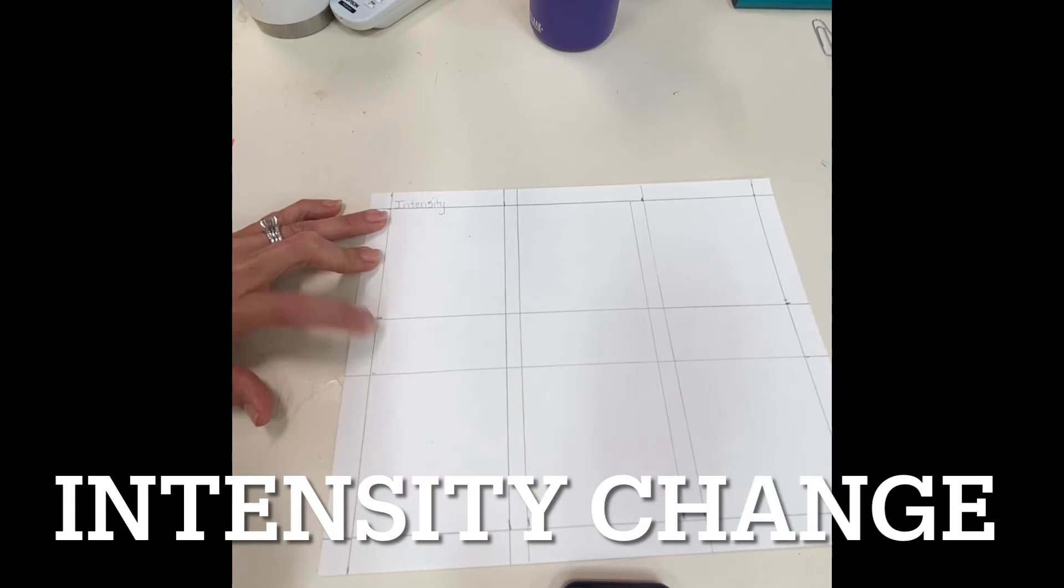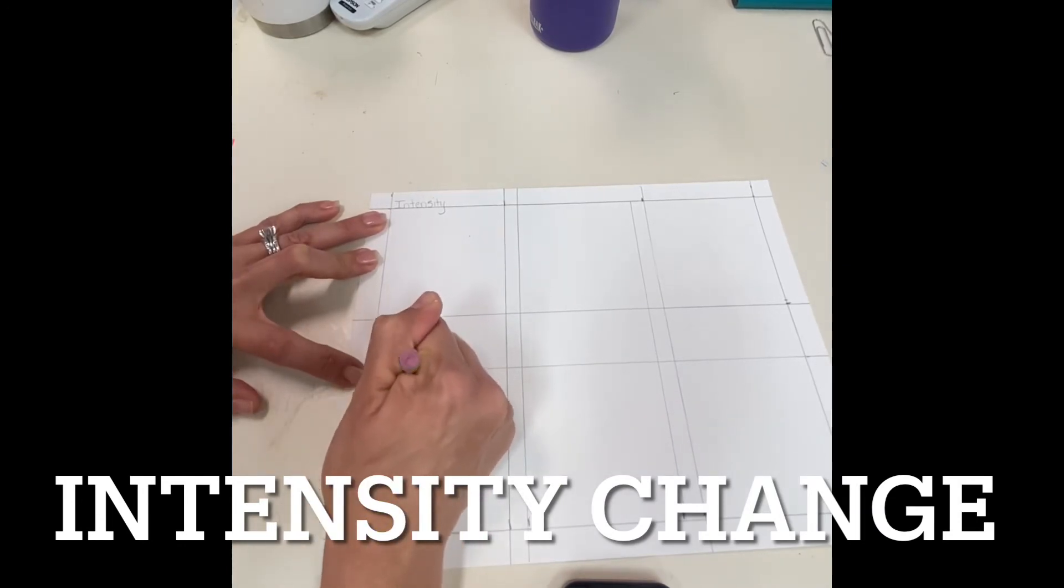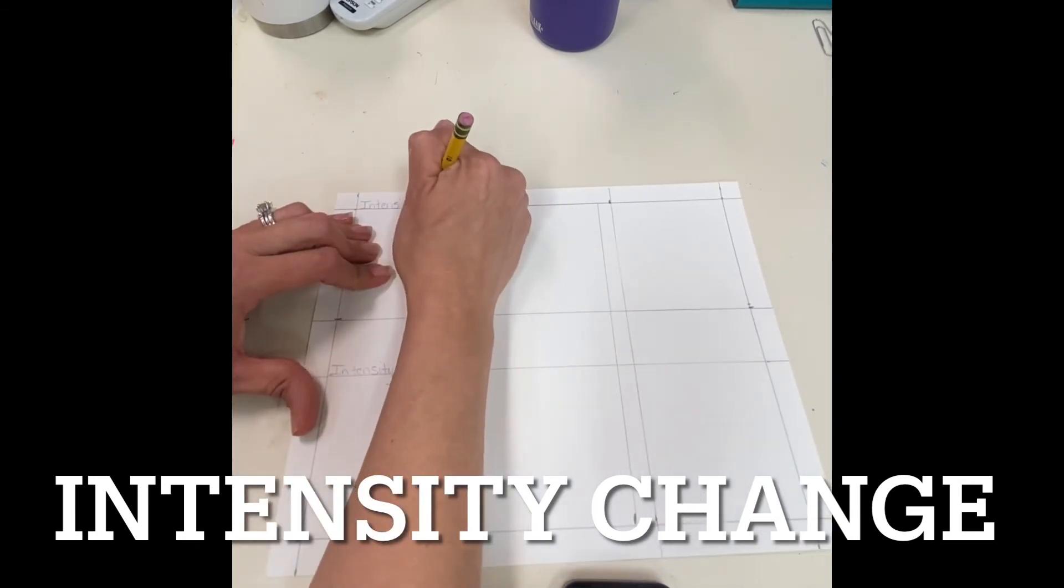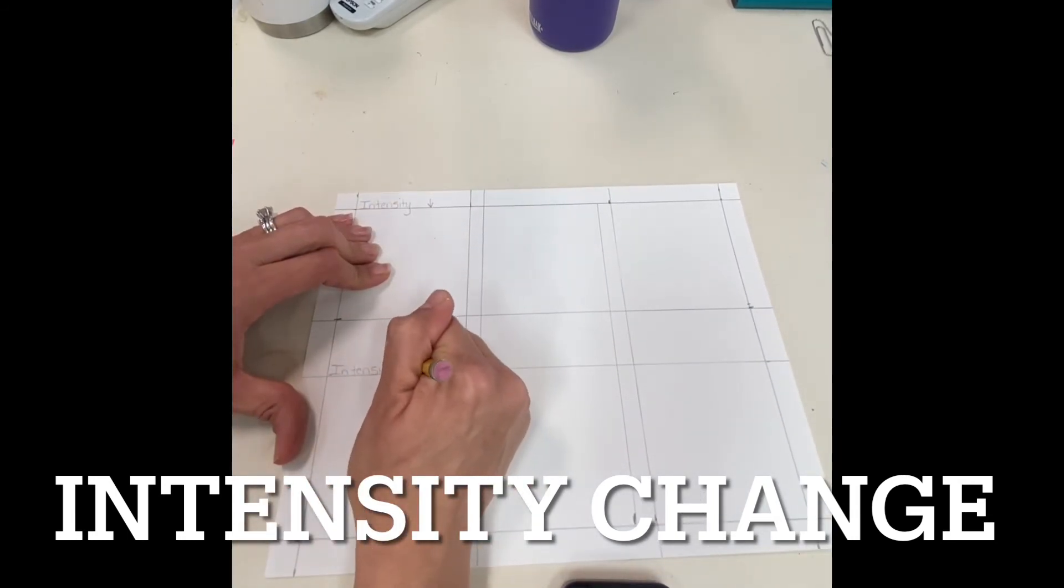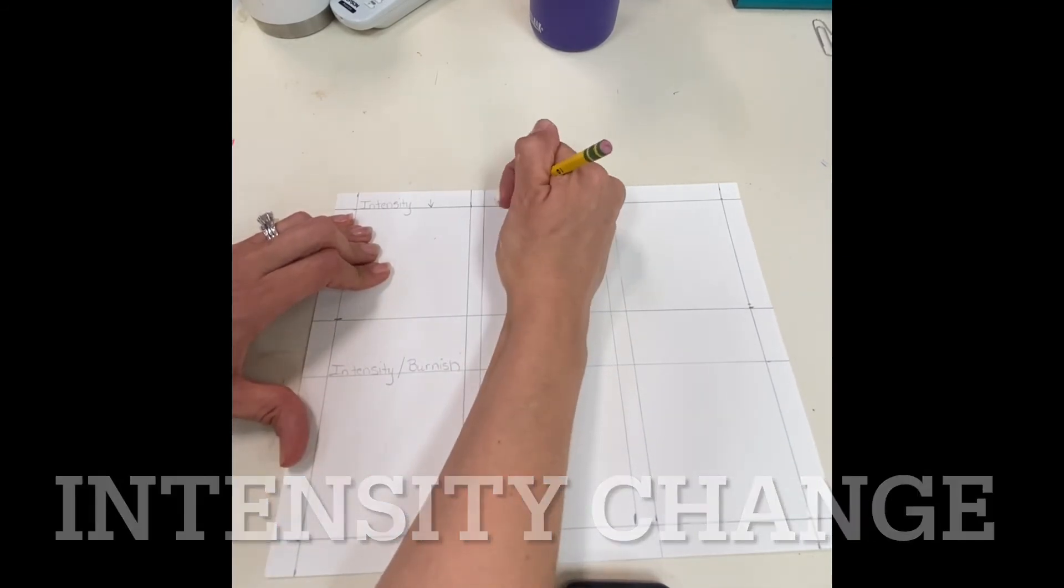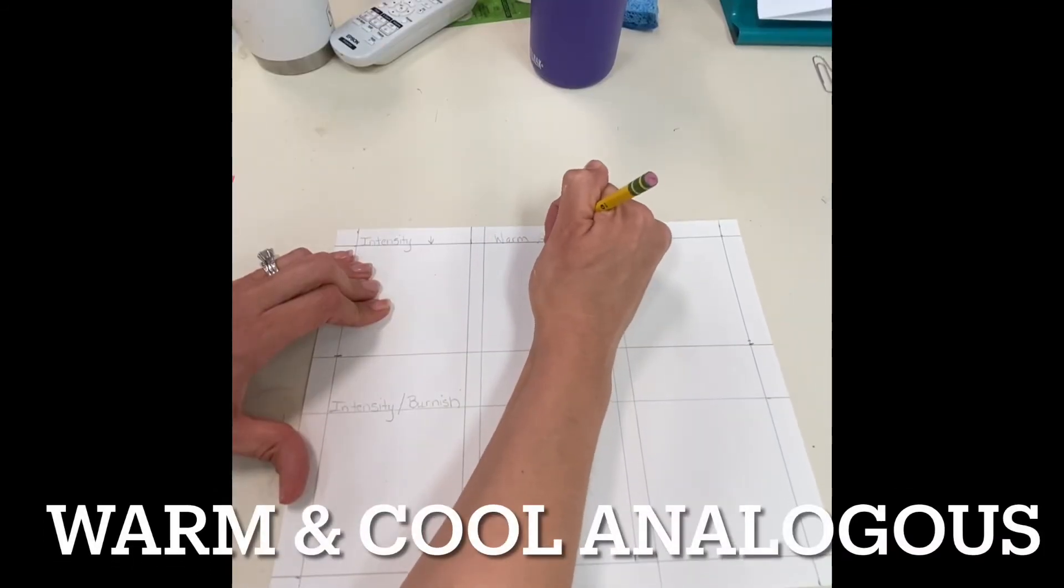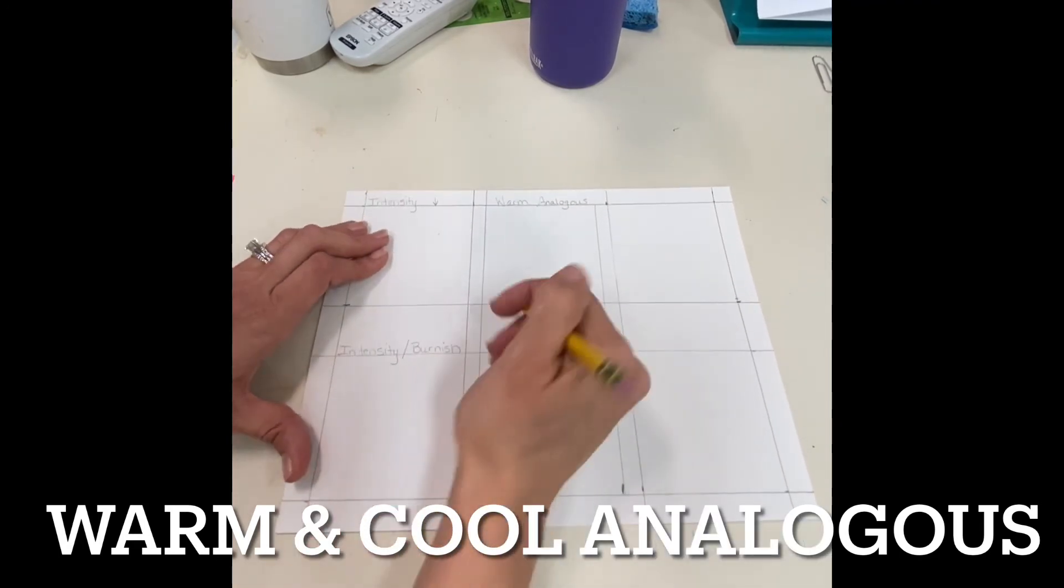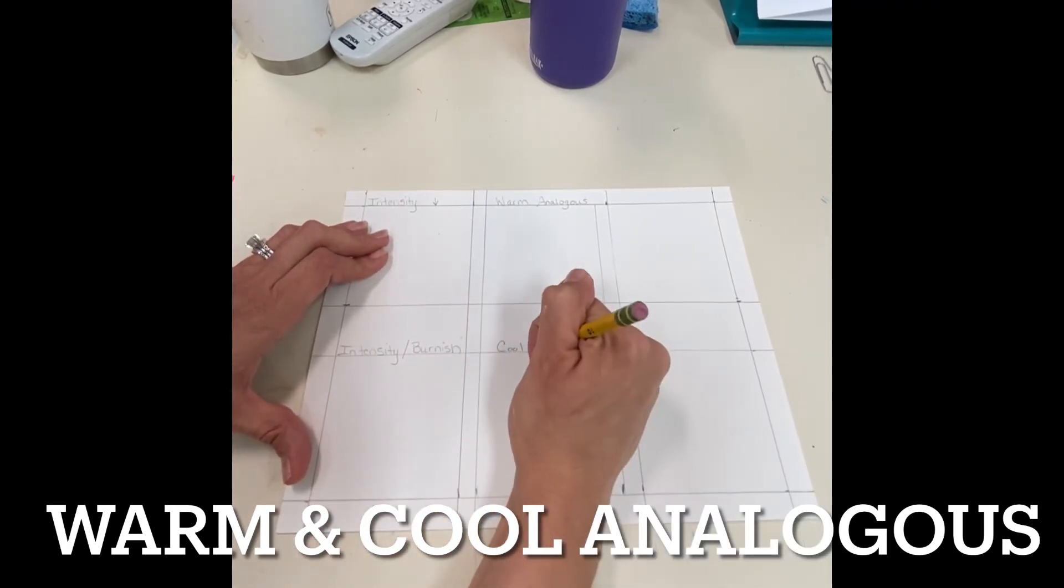You need to record the labeling for each one of these techniques. The first one is the intensity change, so write that on the top and the bottom of the worksheet. In the center you'll have warm analogous colors on the top and cool analogous colors on the bottom. This means that your colors will touch each other on the color wheel.